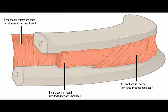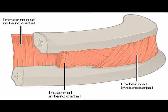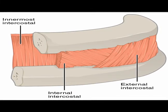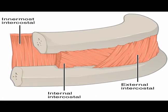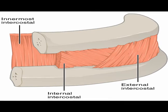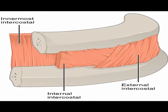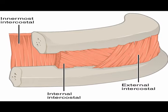The external intercostal muscles aid in normal and forced inhalation. They originate on ribs number one through eleven and insert on ribs number two through twelve. Their action is ribcage expansion through elevation and separation of the ribs.